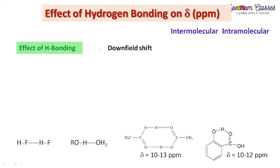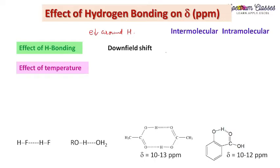The effects of hydrogen bonding are: hydrogen bonding decreases the electron density around protons. If electron density around the proton decreases, it means we are having a downfield shift. Now let's discuss the effect of temperature on hydrogen bonding.